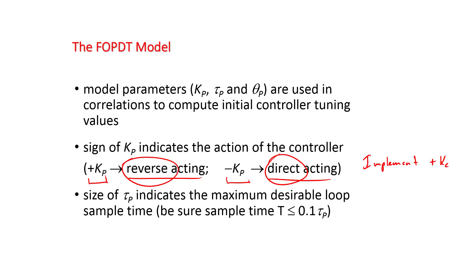The sampling frequency is also important for tau_p. We need at least 10 samples in every time constant of time. So if you have a time constant of 2 seconds, you need a sampling frequency of at least 0.2 seconds — the sampling time needs to be that fast or faster.